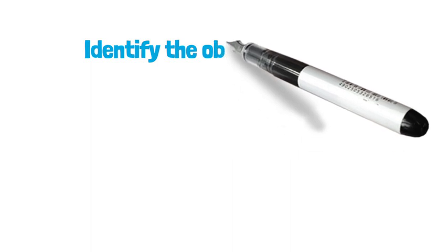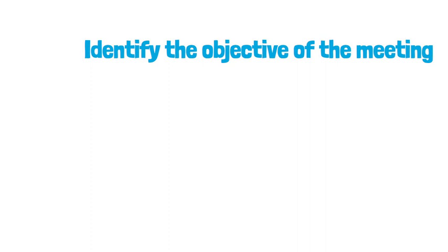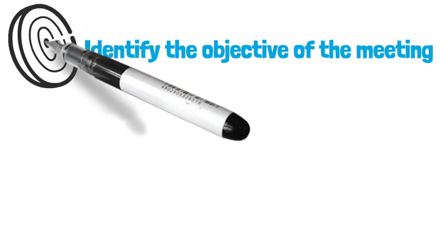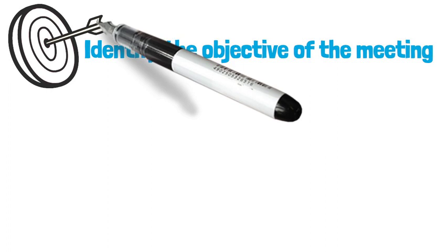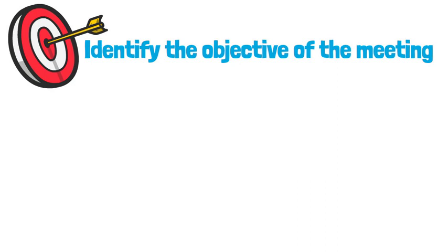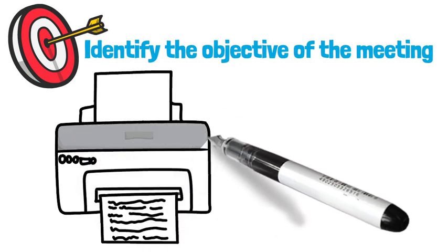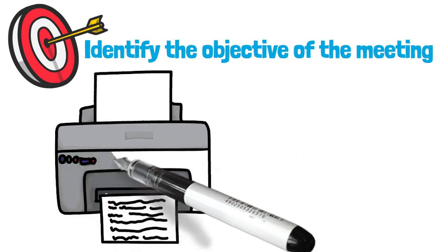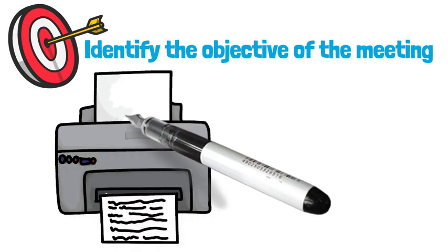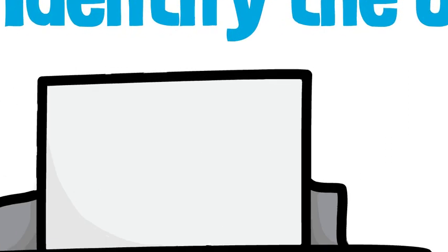First, identify the objective of the meeting. Prior to the meeting, if you're asked for the reason for the gathering, the objective should answer that question. In order for the meeting to be productive and successful, it is important for the meeting participants to be aware of the objectives and desired results beforehand so as not to waste anyone's time. The objective will provide attendees with insight into what's expected so they're not taken by surprise and can join the meeting prepared to discuss particular items.